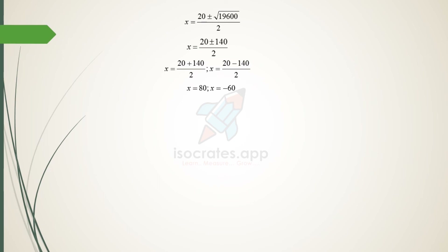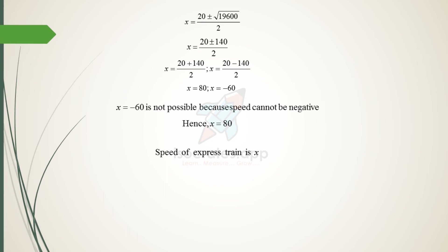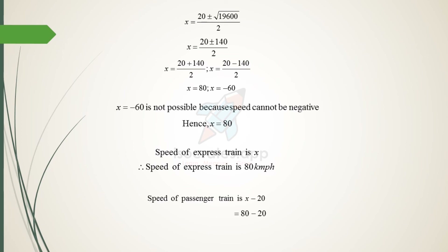The two possible values are x equals (20 plus 140)/2 = 80, or x equals (20 minus 140)/2 = minus 60. Since speed cannot be negative, x equals minus 60 is not possible. Therefore, x equals 80. So the speed of the express train is 80 km/h, and the speed of the passenger train is x minus 20, which equals 80 minus 20, giving 60 km/h.